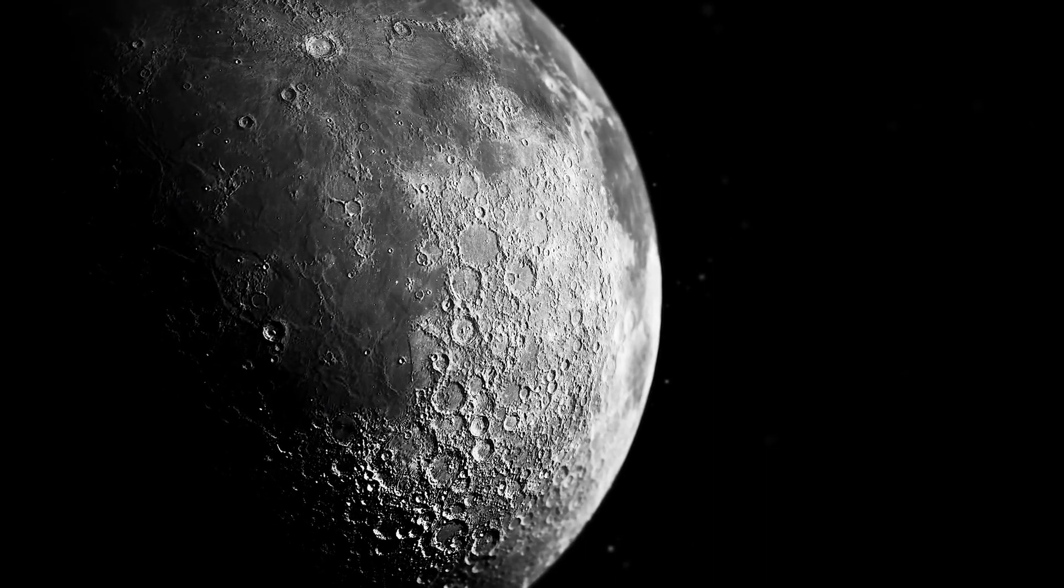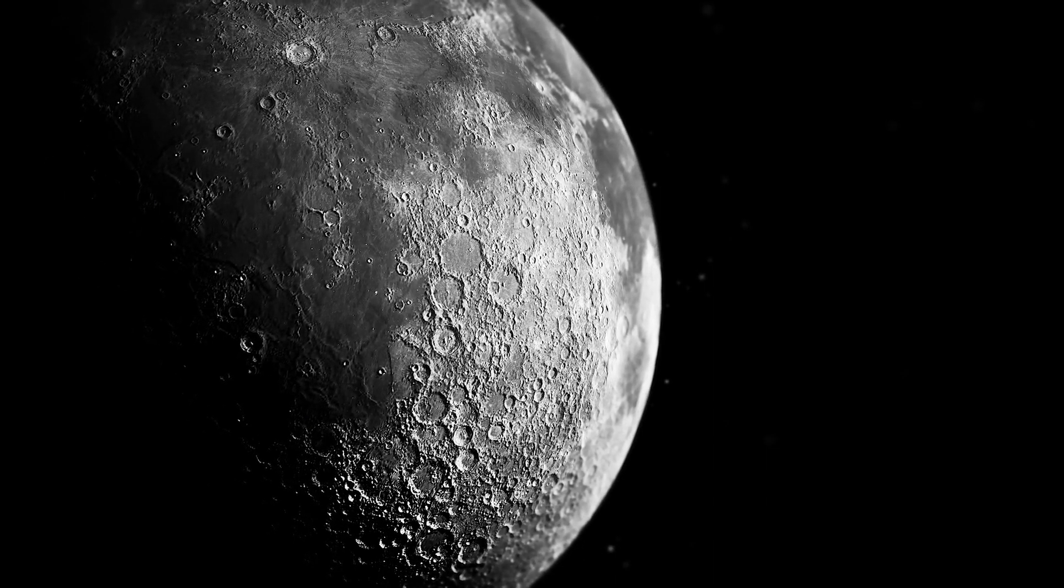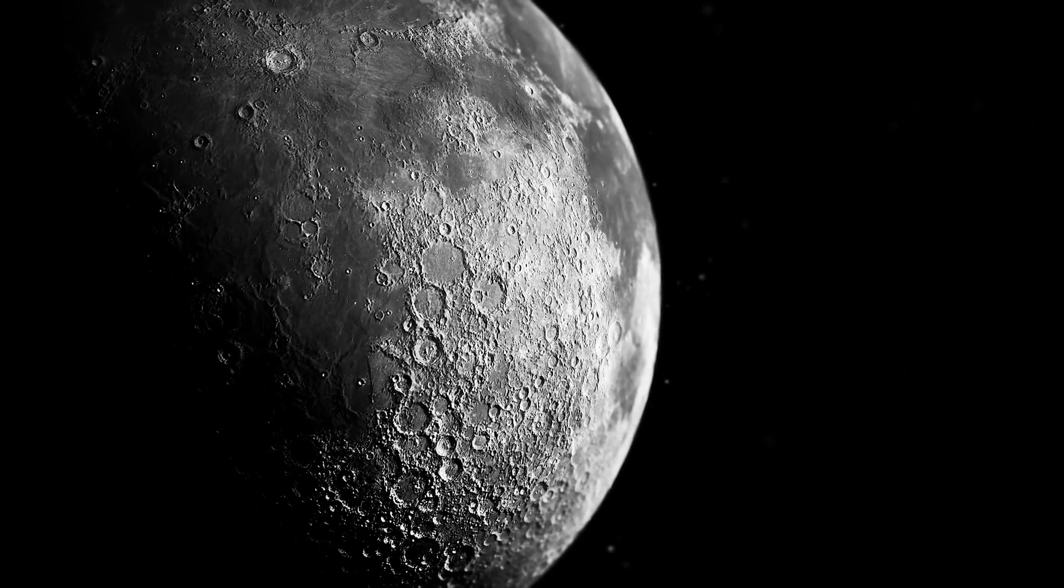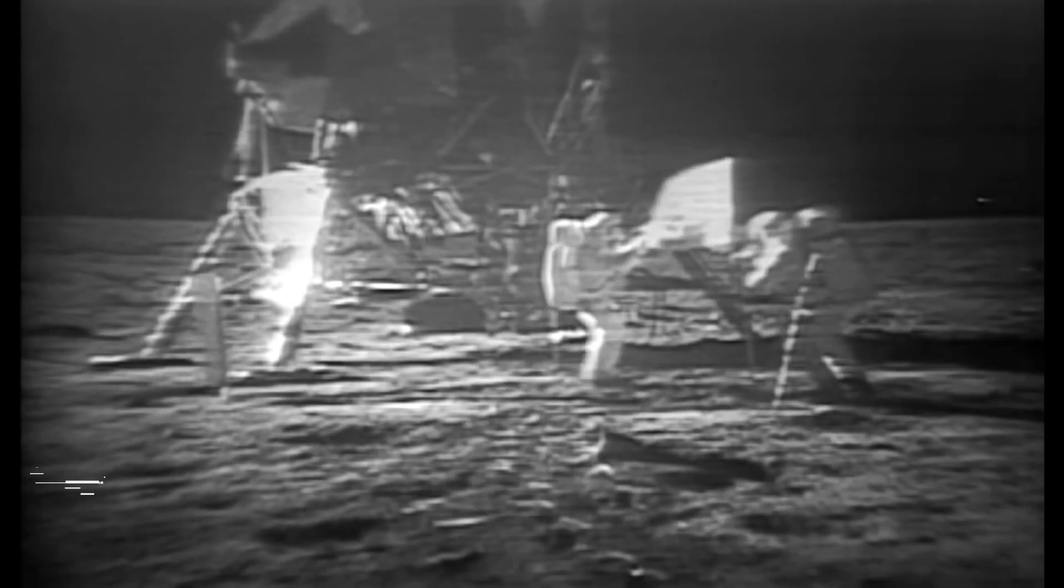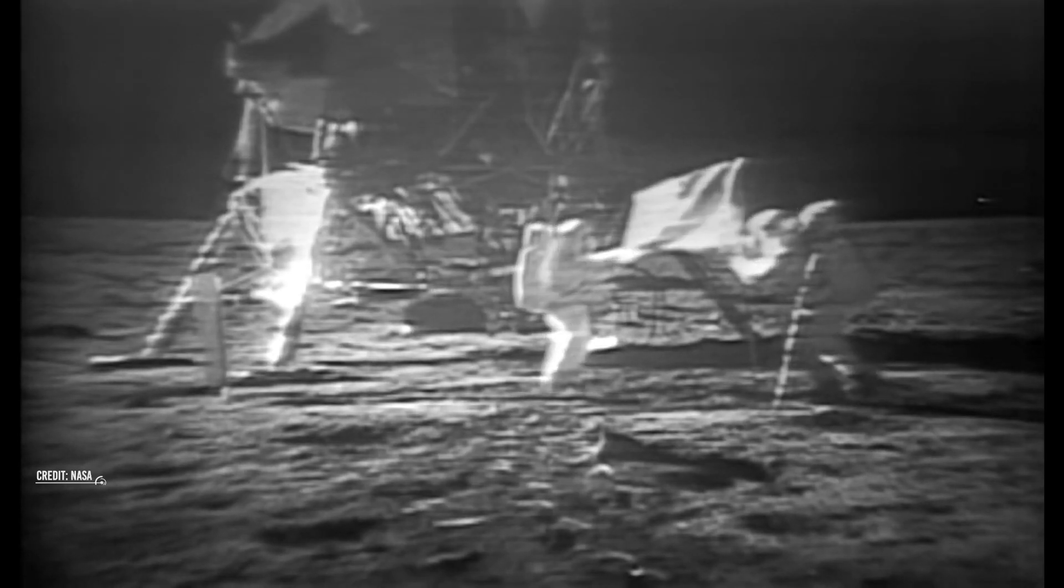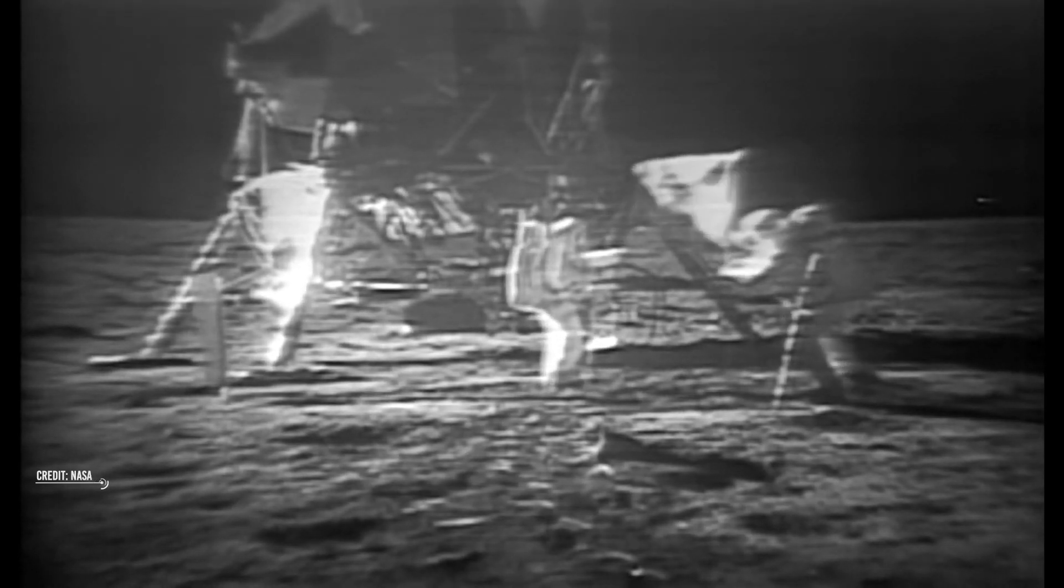To get this number, we look for the oldest things we can find. For instance, moon rocks work well for this. That's the reason why, when astronauts went to the moon, they brought some rocks back for scientists to study them. They were able to find out how old they are.